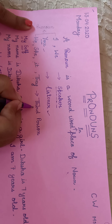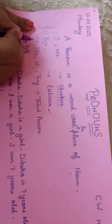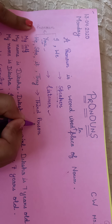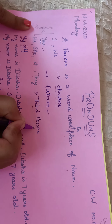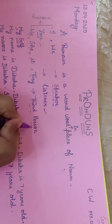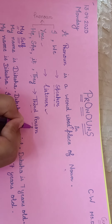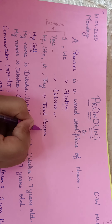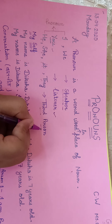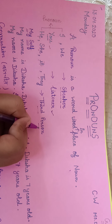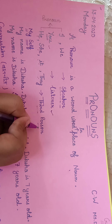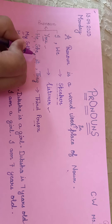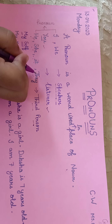And third person — he, she, it, they. What is the meaning of third person? Third person is the person which we are talking about — jiske baare mein, tisre insaan ke baare mein baat kar rahe hain. That is third person. For example: he, she, it, they.